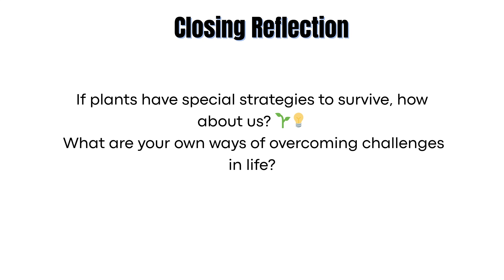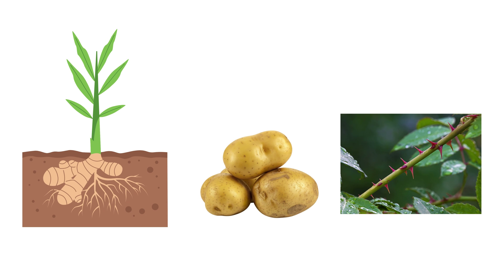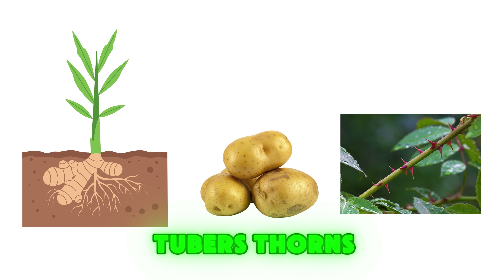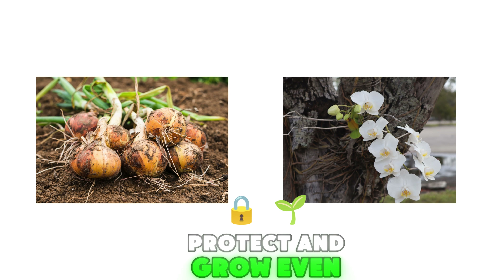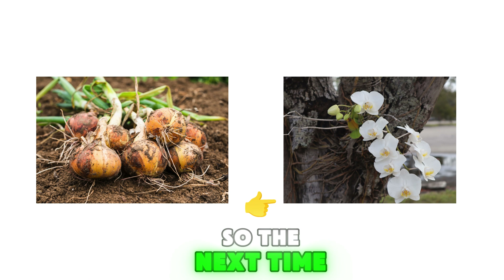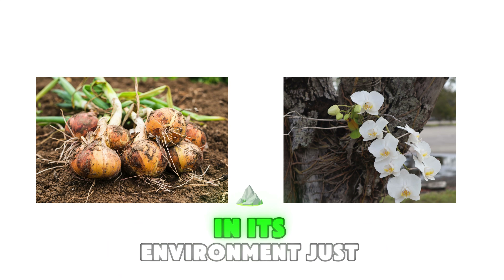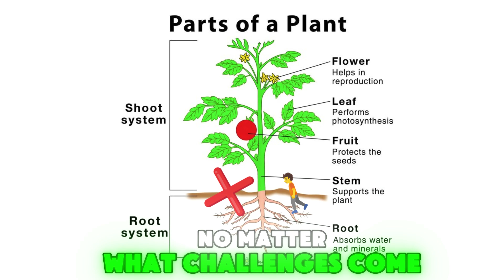If plants have special strategies to survive, how about us? What are your own ways of overcoming challenges in life? Today we discovered that plants are not just beautiful — they are amazing survivors. Through their specialized structures like rhizomes, tubers, thorns, bulbs, and aerial roots, plants show us how to adapt, protect, and grow even in the toughest conditions. So the next time you see a potato, a rose, or an orchid, remember each one has its own special way of thriving in its environment. Just like plants, we too can find ways to grow stronger and keep blooming, no matter what challenges come our way.